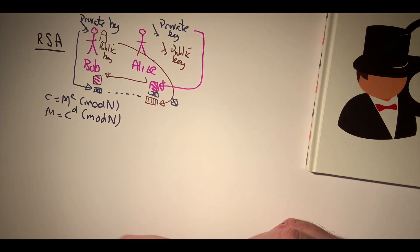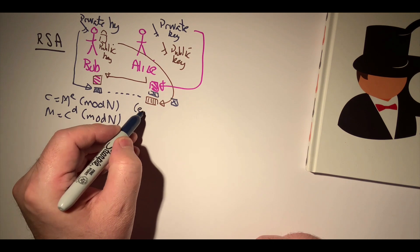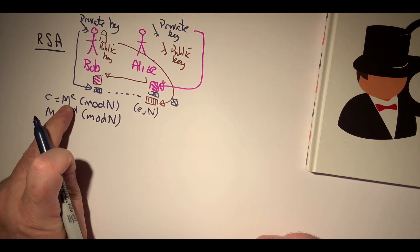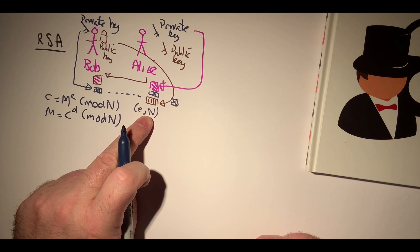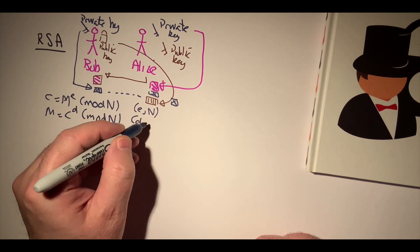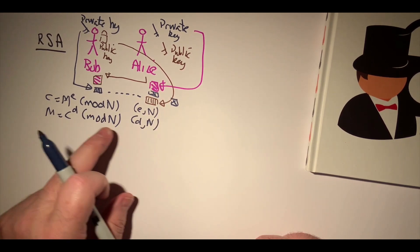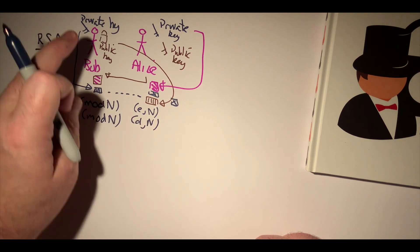Our public key is then e comma n, the modulus, and d comma n is the decryption key or the private key.